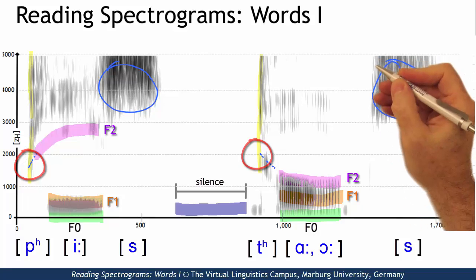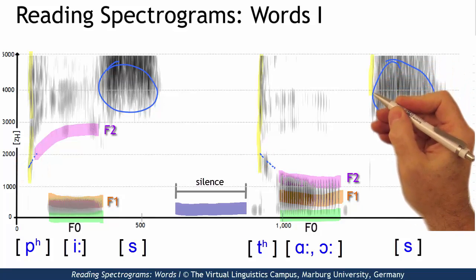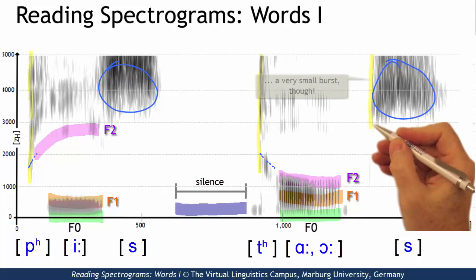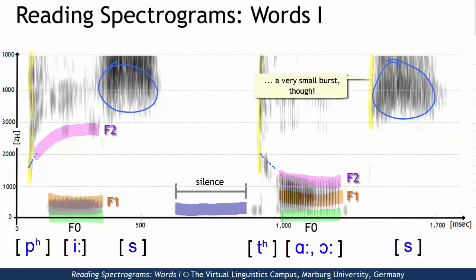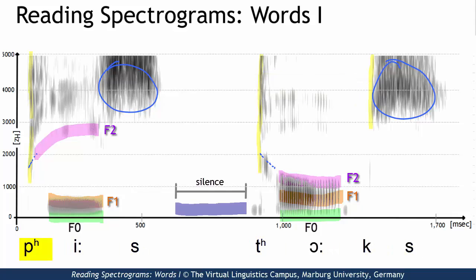And then there is another plosive before the final fricative. It involves a high frequency burst and must thus be alveolar. So the result is clear. I said peace talks.